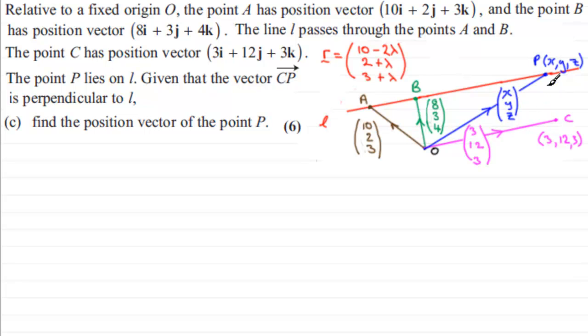And we've got a point P that lies on L, and we're given that C to P is perpendicular to L. So, that would mean that if that's C, P would be somewhere there. Remember, this is an infinitely long line. Let's just extend that and this would be our point P. Now, let's say we give it coordinates XYZ.